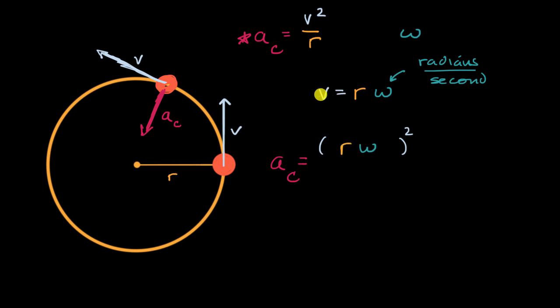There you go. All I did is I said our linear speed right over here is equal to our radius times the magnitude of our angular velocity, our angular speed. So everywhere I saw a v here, I am just replacing it with r omega. And so I have r omega, that entire quantity squared, over r.